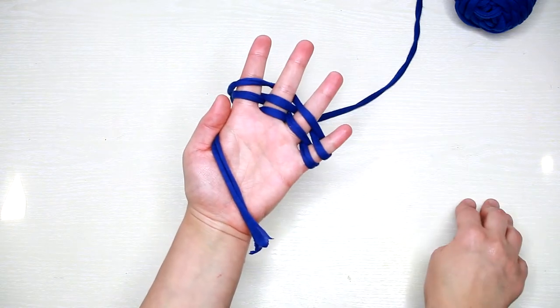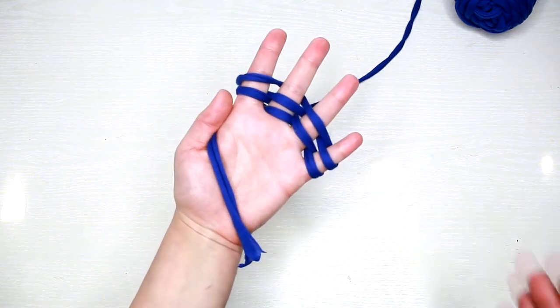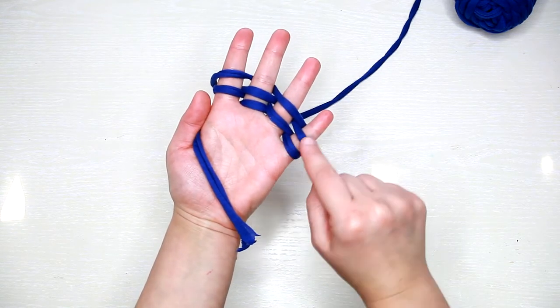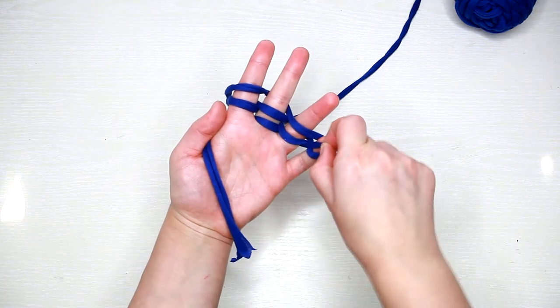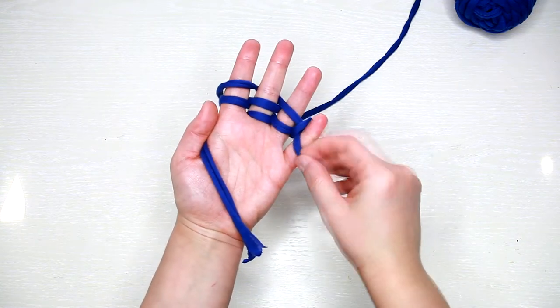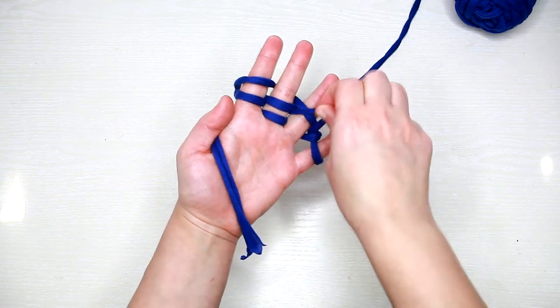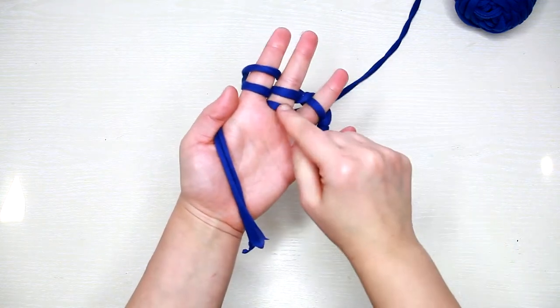Starting with the little finger, pull the lower loop over the top one and to the back of the finger. Do the same with the remaining stitches - over the top loop and to the back of the finger.